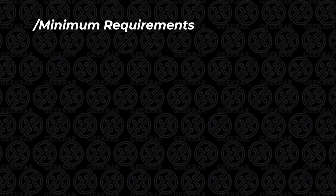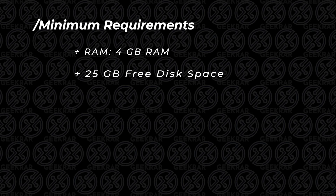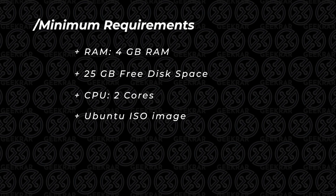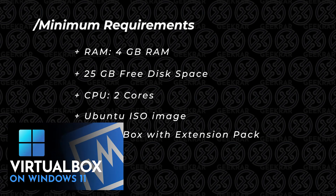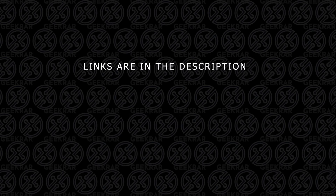Before we get started, let's take a look at the minimum requirements. For RAM, we're going to need at least 4 gigs available, 25 gigs of hard disk space available, 2 CPU cores, the Ubuntu ISO image file, VirtualBox, and the extension pack. If you don't know how to install it, you can check out this video and I'll walk you through those steps. All the steps and tools used in this video will be linked in the description below.